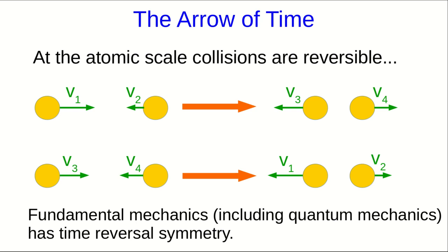But this makes it rather mysterious why on our scale we get things like eggs falling on the floor that's clearly irreversible, even though the underlying mechanics on the atomic scale is reversible.